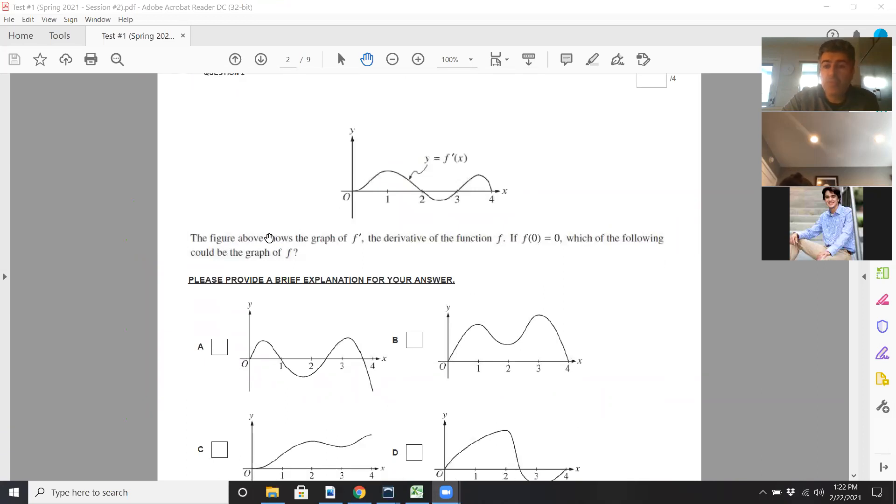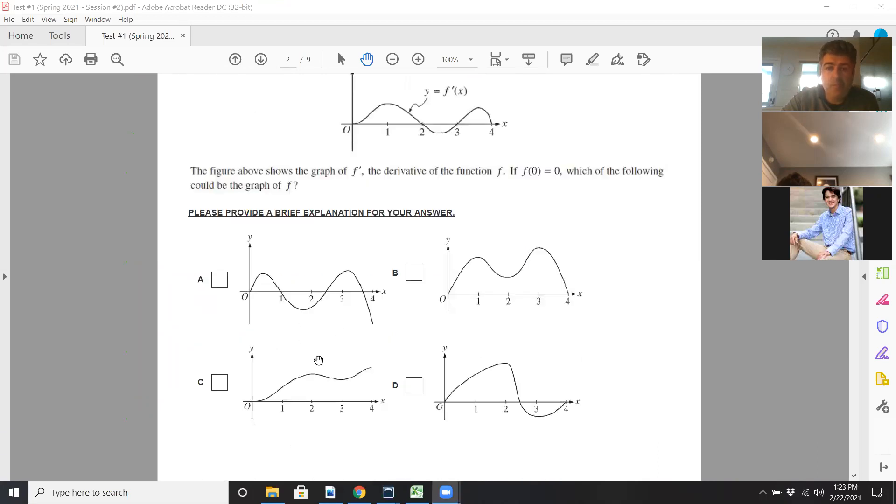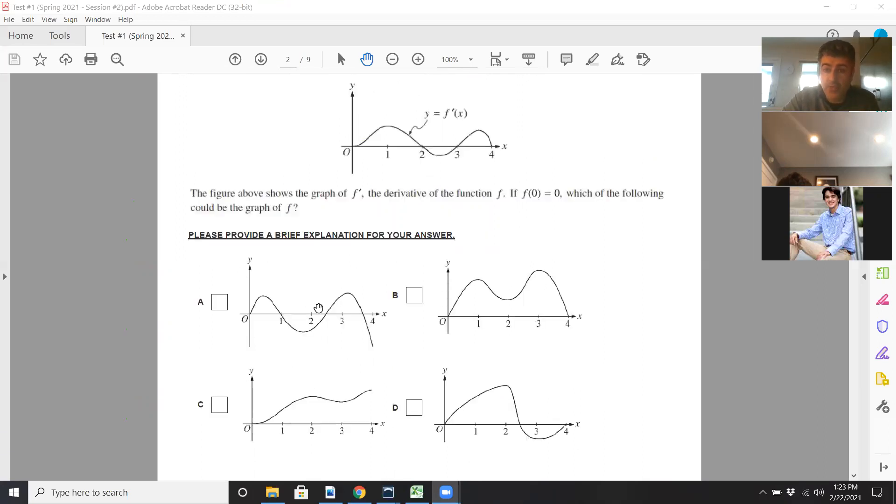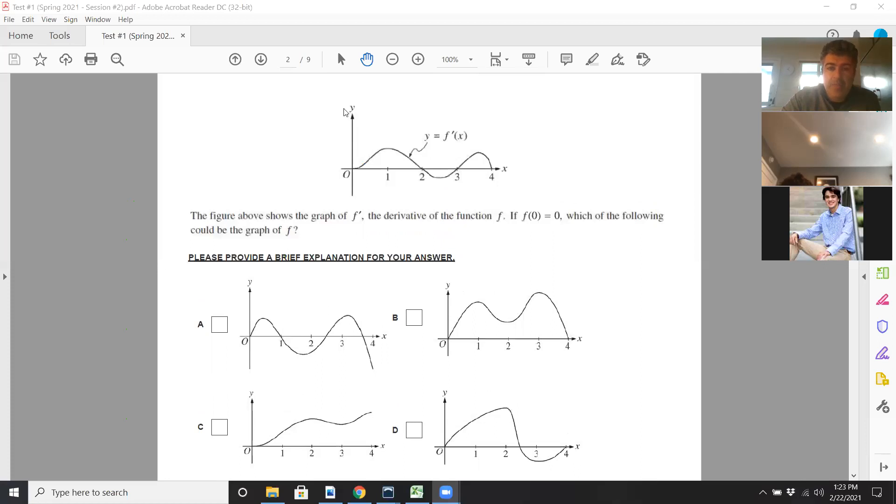Okay, this one here. You have to interpret the graph. This is an f prime graph. You want to see which one is a graph of f. You also have f of 0 equals 0, but all of them show that, so it doesn't really help too much with eliminating choices. Now, how do you determine from an f prime graph? The y coordinates on the f prime graph represent f prime. And what's f prime? The slope of the tangent line for the graph of f.